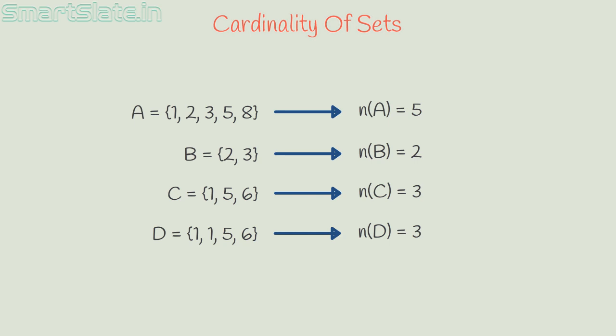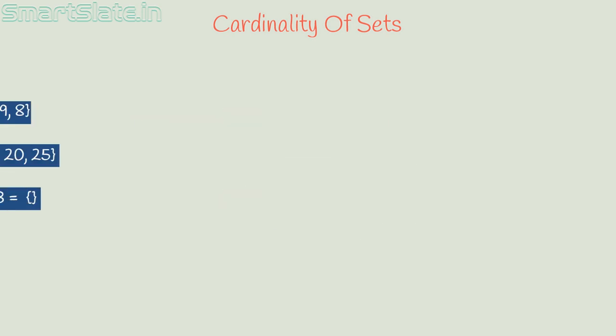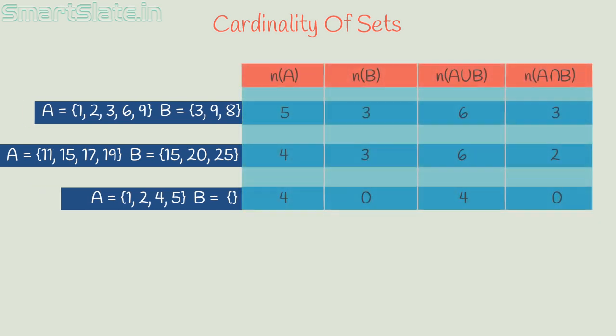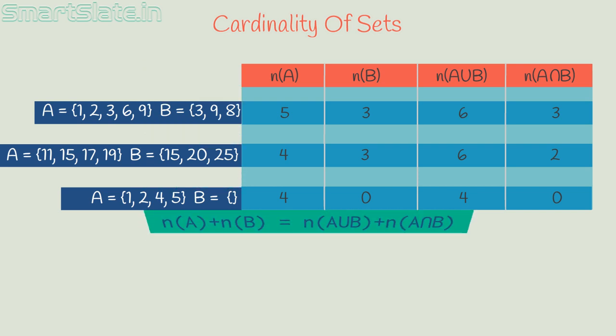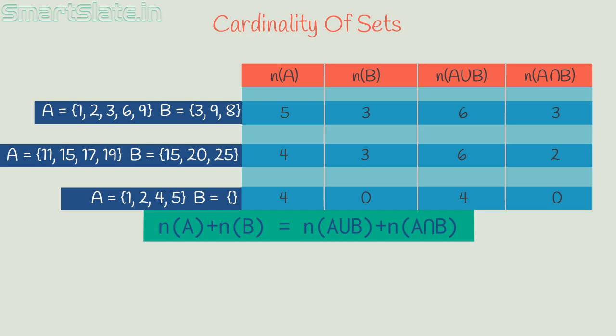Let's see what is the relationship between the cardinal number of sets over their basic operations on sets. Consider these three pairs of sets. You can see in the table: cardinality of A, cardinality of B, cardinality of A union B, and cardinality of A intersection B. Observing these numbers carefully, we can conclude that cardinality of A plus cardinality of B is equal to cardinality of A union B plus cardinality of A intersection B. This property is very important because if you know any three of these elements, you can easily find the fourth.